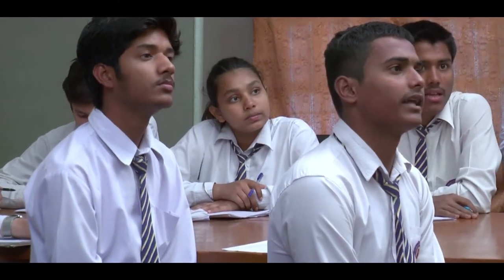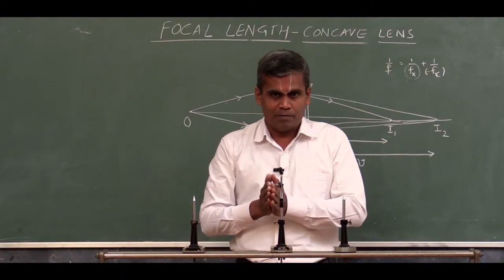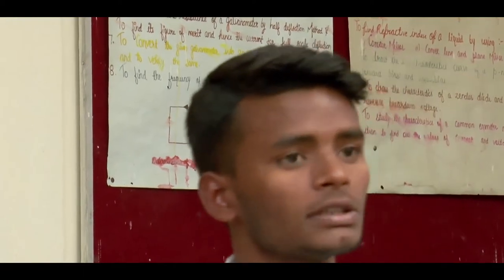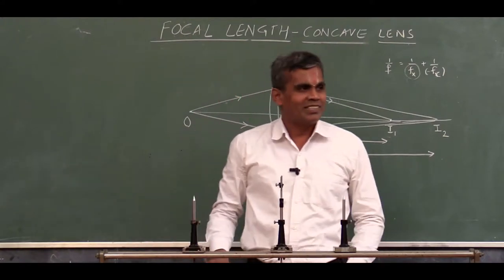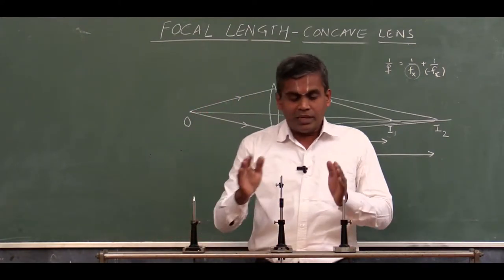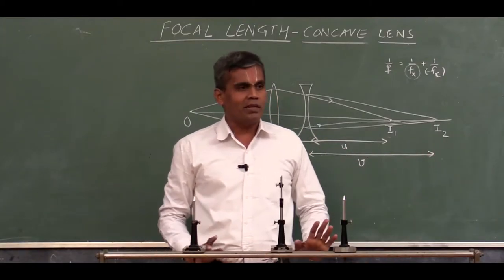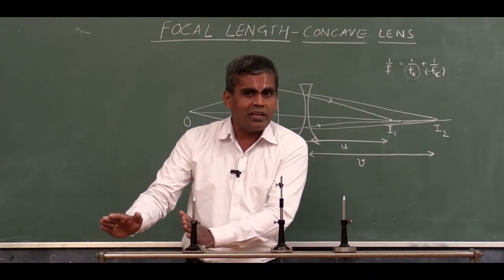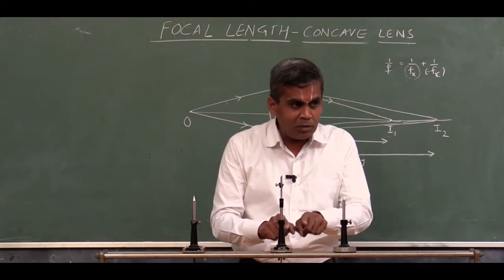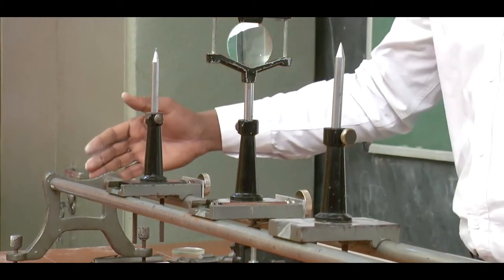हमारा aim क्या था? Concave lens की focal length निकालना। हमें यहाँ पर Concave lens को introduce करना पड़ेगा। यहाँ पर जगह कम है। Convex lens को 50 cm position पर क्यों रखा? 50 cm में रखने से जगह थोड़ी कम हो रही है। Concave lens introduce करने के बाद image पीछे जाएगा, मतलब हमें Optical Bench में जगह होनी चाहिए, ताकि image final निकालने के लिए needle को move कर सकें। इसलिए 50 cm में रखना जरूरी नहीं है — हमें ज़्यादा जगह बनानी है ताकि experiment पूरा करने के लिए Optical Bench की जगह sufficient हो।